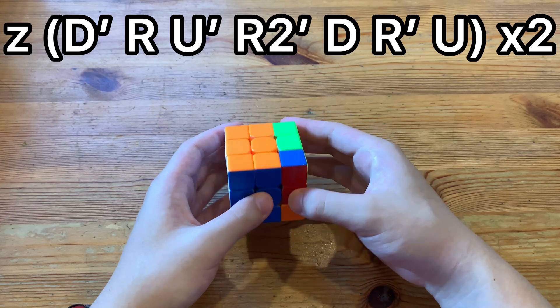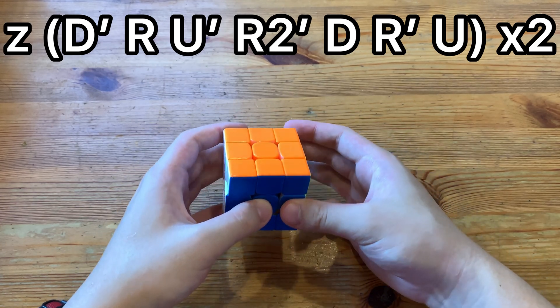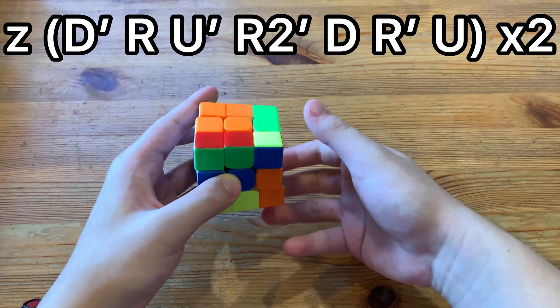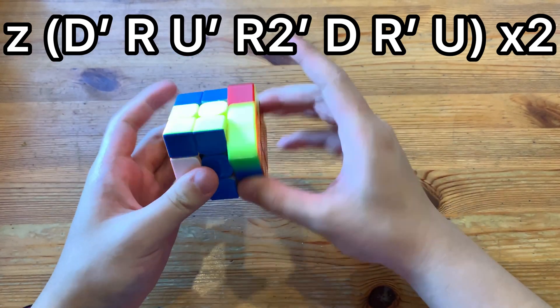But in the middle you can just do U D prime. And it would look something like that.